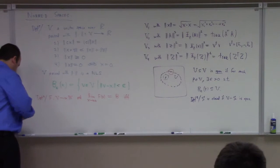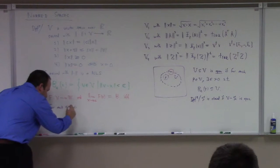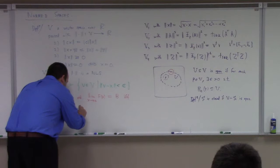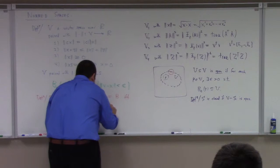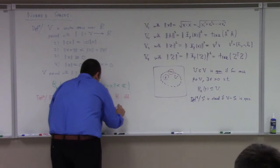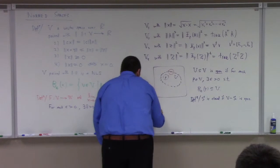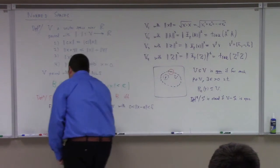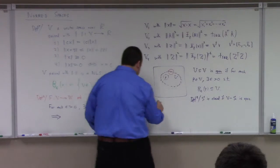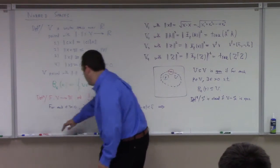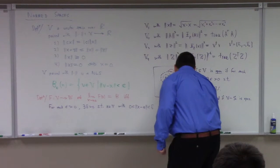So it can only apply for each epsilon greater than zero, there exists delta greater than zero, such that x in V with zero less than norm of x minus a, less than delta, implies what? Maybe I should write it up here. It implies the norm of f of x minus v is less than epsilon.